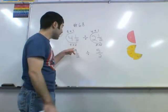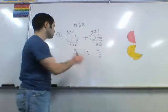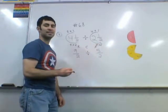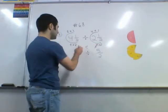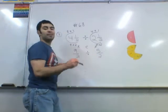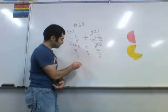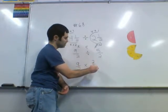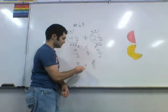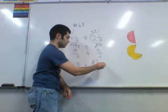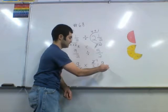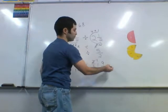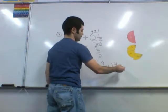Now you can do your multiply by reciprocal — keep, change, flip. Keep the change, you filthy animal — that's what some people say. Home Alone is a great movie. Anyway, we're going to go nine halves times two-fifths. And look at this — those two cross-cancel, so all we have left is nine-fifths. Then you simply do top divided by bottom, and nine-fifths is one and four-fifths.